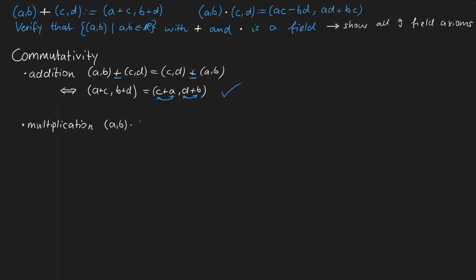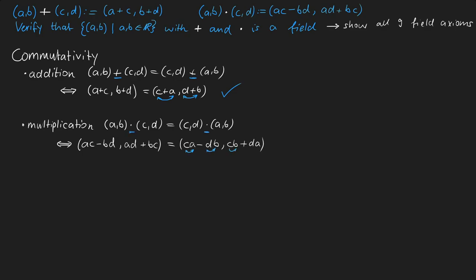For the commutativity of multiplication we need to show that (A,B) times (C,D) is the same as (C,D) times (A,B). After applying the definition of multiplication we get those two terms, and they are equal because we can swap variables through the normal commutativity of addition and multiplication.